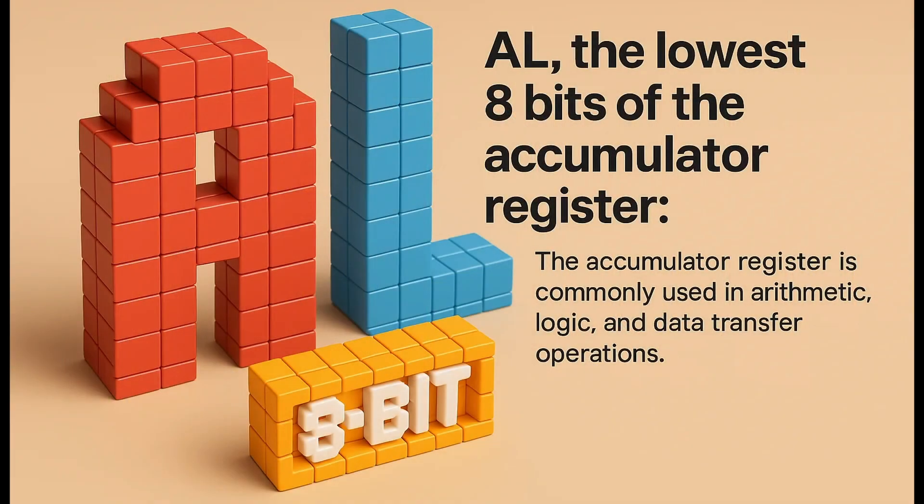This is the AL register, which is the lowest 8 bits of the accumulator in Intel and AMD processors. It can store exactly one byte. When using addition, subtraction, division, or multiplication processor instructions, the result of those operations gets stored in the accumulator register. Whilst 8 bits does not seem like a lot of memory, the AL register is only part of the accumulator register. Keep watching to see how it gets extended.